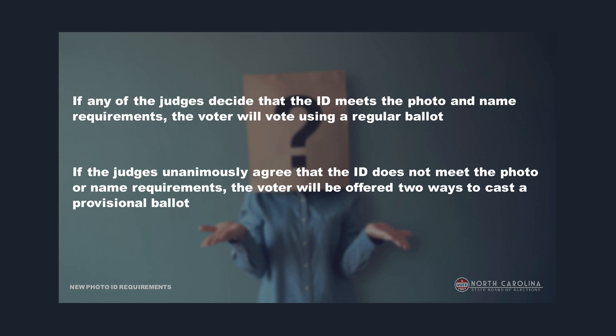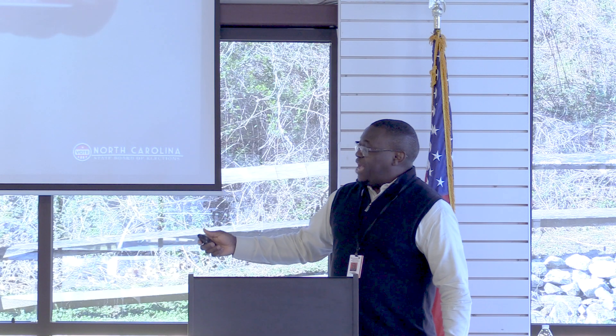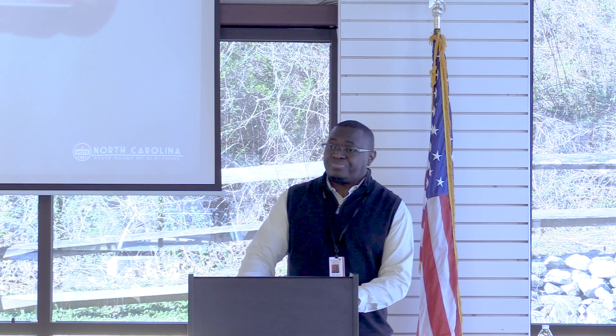The three-judge panel is not like a court of law where majority rules. In this case, if only one of the three judges decides there's a reasonable resemblance and the ID is good, then the voter gets to vote the regular way. If the ID is not approved, the voter receives a provisional ballot. A provisional ballot allows you to still vote, but it's set aside for further investigation. The Board of Elections will do the investigation, and the person can also come back within ten days after the election to bring another form of ID so the vote can count.